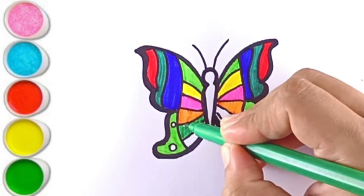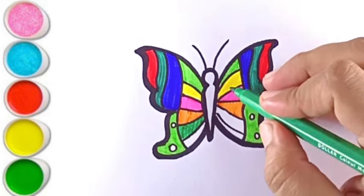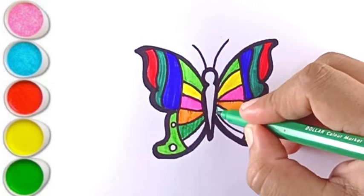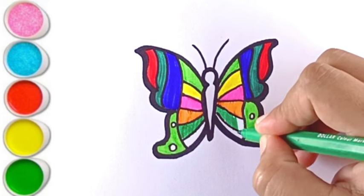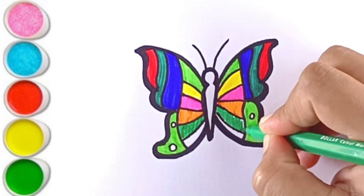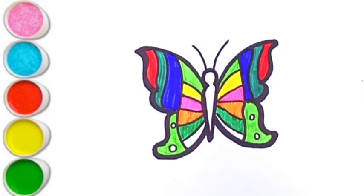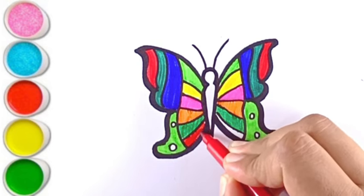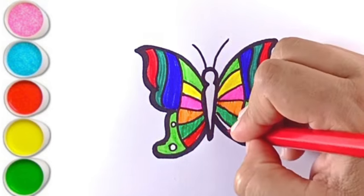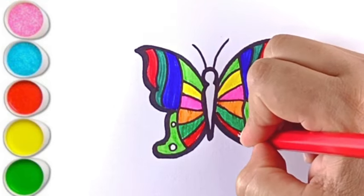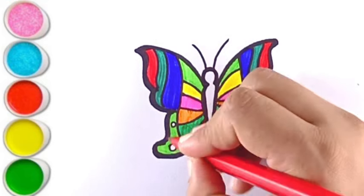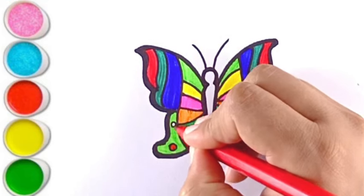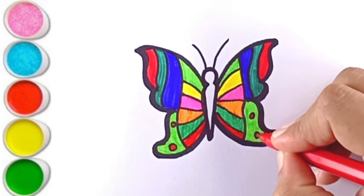A, B, C, D, E, F, G, H, I, J, K, L, M, N, O, P, Q, R, S, T, U, V, W, X, Y, and Z. Now I know my ABC's. Next time won't you sing with me.